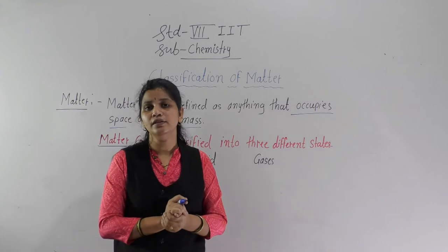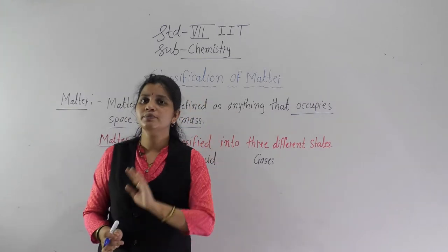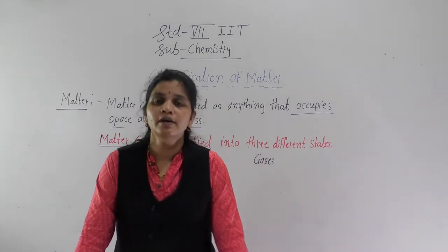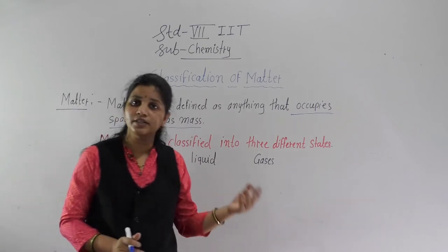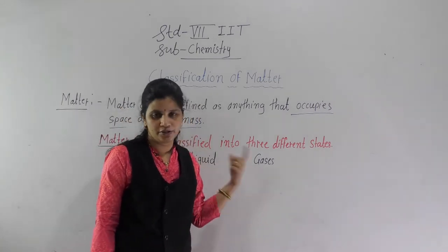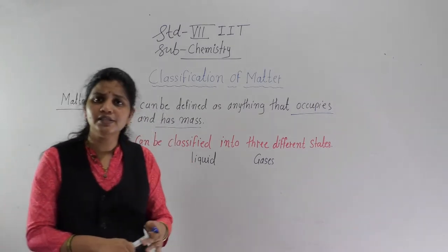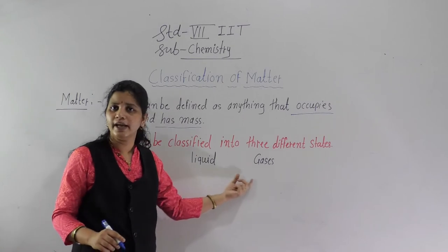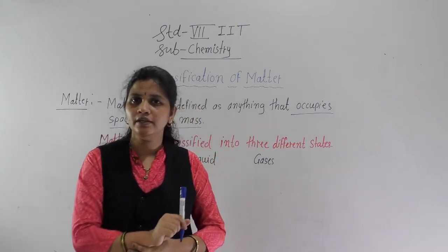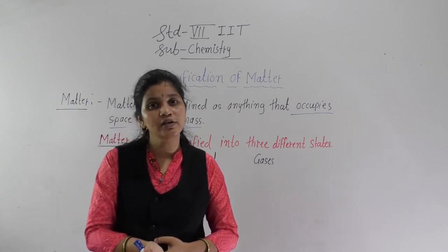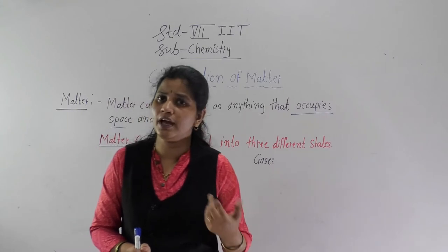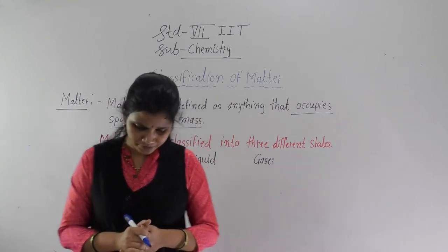All substances that occupy space and have mass are known as matter, and they are found in three different states: solid, liquid, and gaseous. For example, this pen is in the solid state, water is in the liquid state, and air is a mixture of gases — oxygen, nitrogen, carbon dioxide — which are all in the gaseous state.